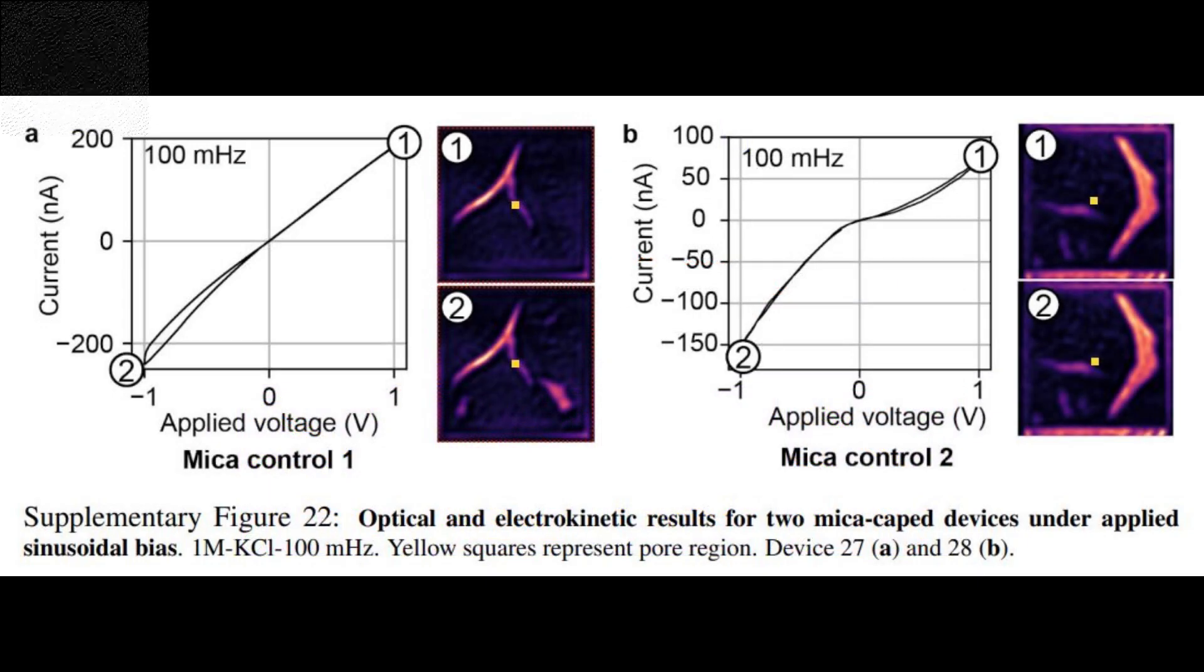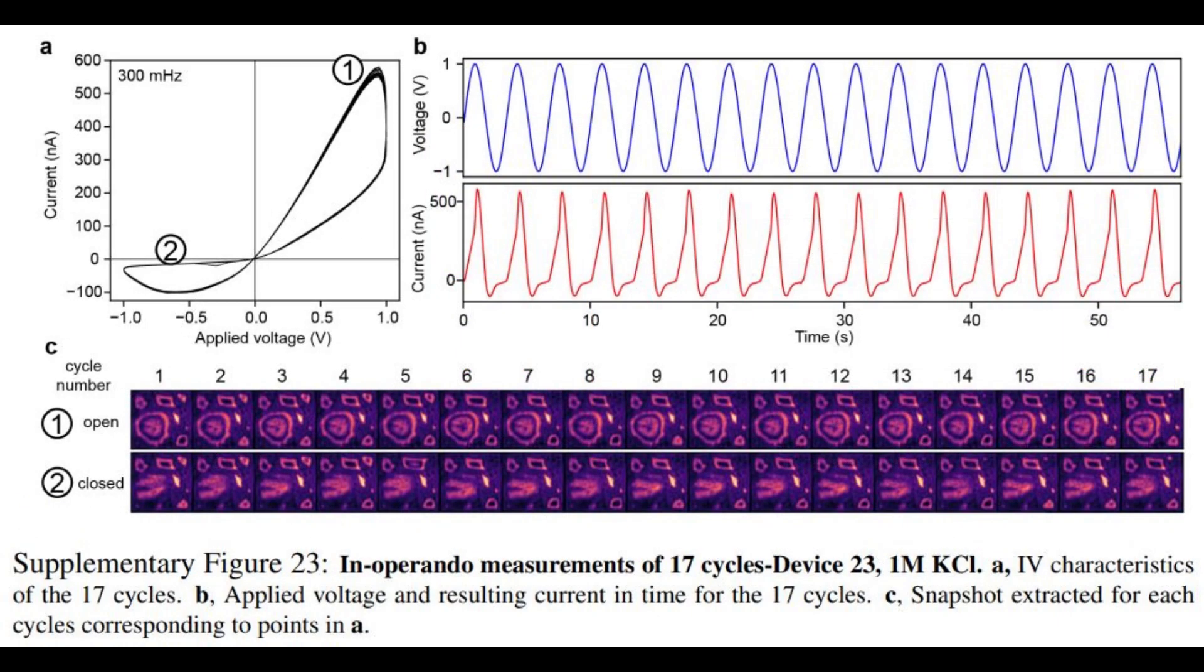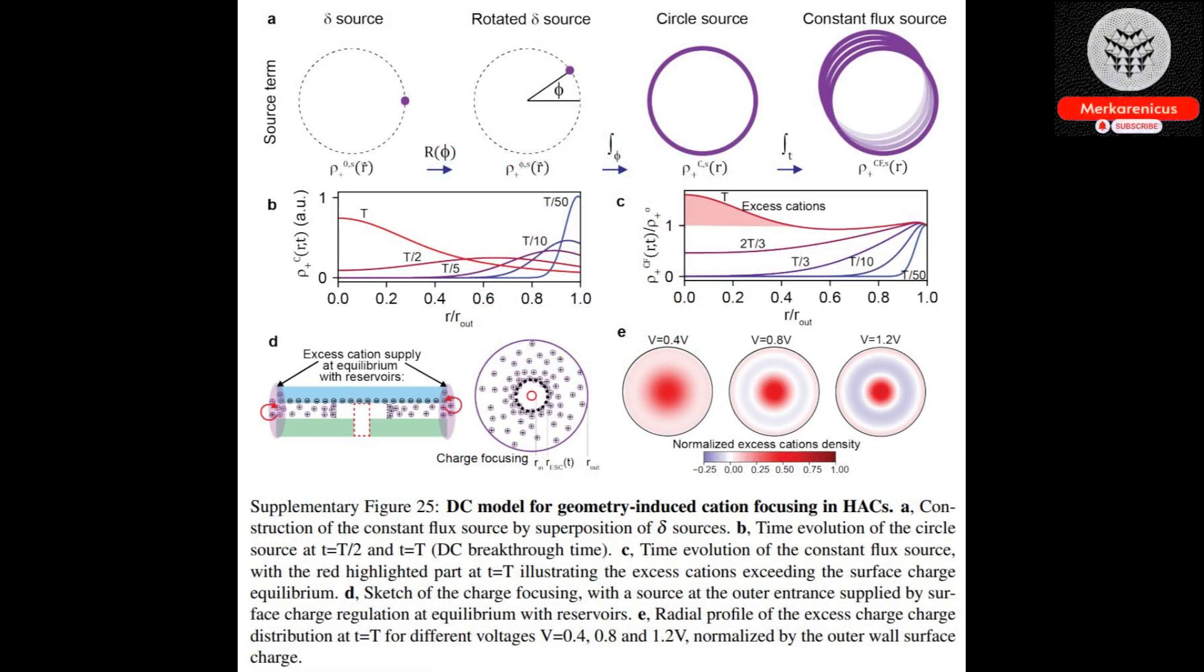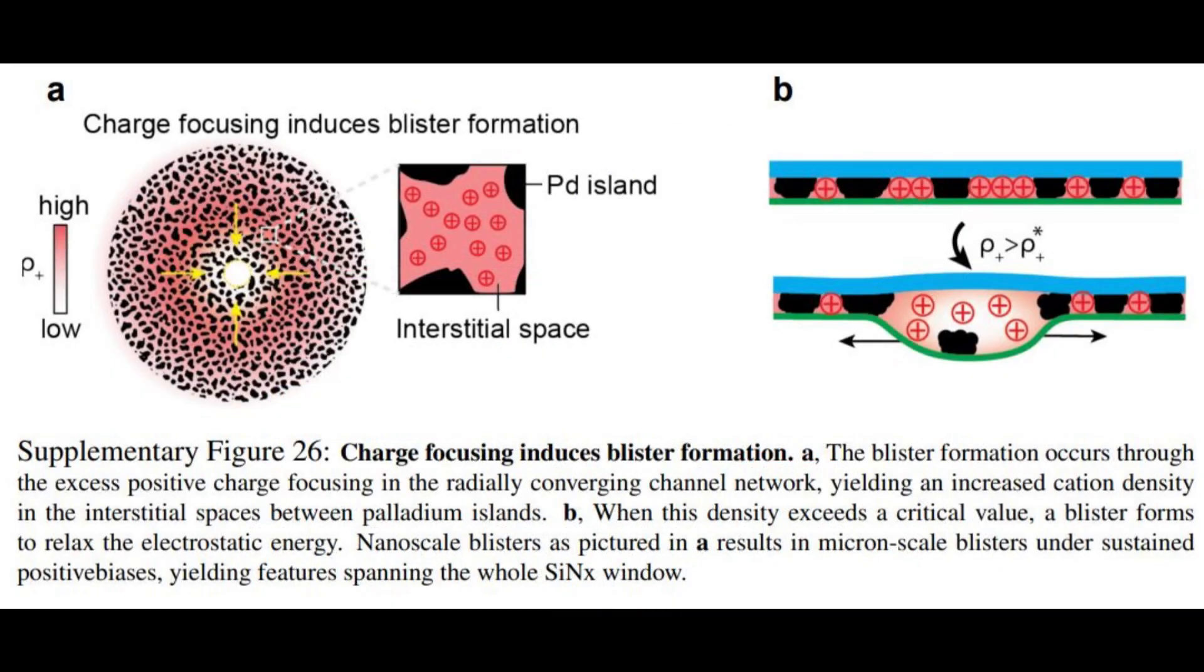This innovative approach aims to closely replicate the brain's highly efficient method of information processing. According to Radenovic, while memristors have been utilized in the construction of electronic neural networks, their objective is to develop a nanofluidic neural network that capitalizes on variations in ion concentrations, mirroring the behavior of living organisms.